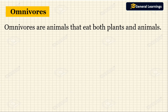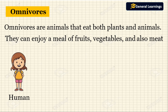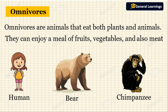Now we will see about omnivores. Omnivores are the animals which eat both plants and other animals. They enjoy both fruits and vegetables as well as meat. Examples of omnivores are humans — as humans we eat both fruits and meat — bear, and chimpanzee. These animals eat both plants and animals.